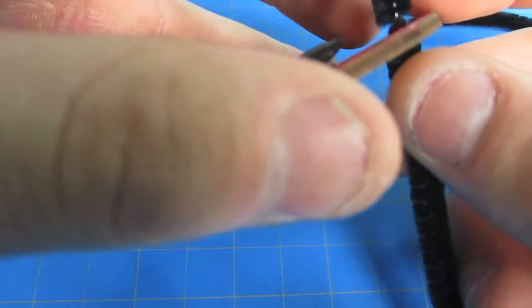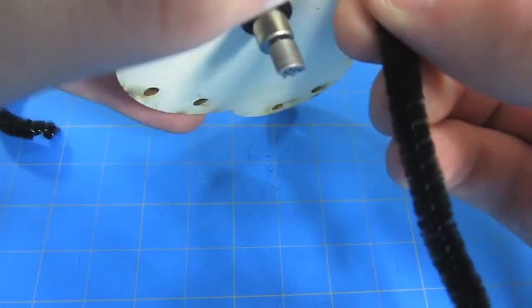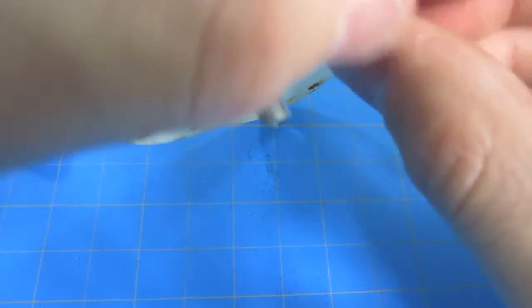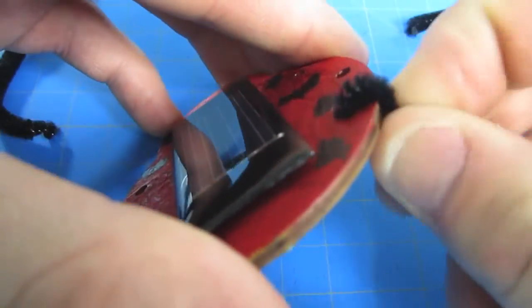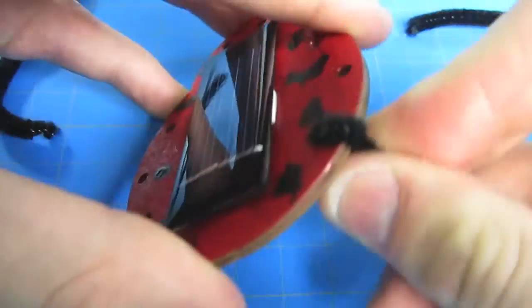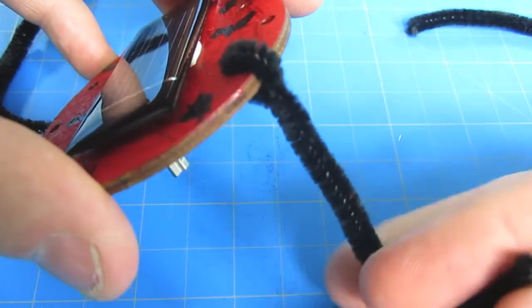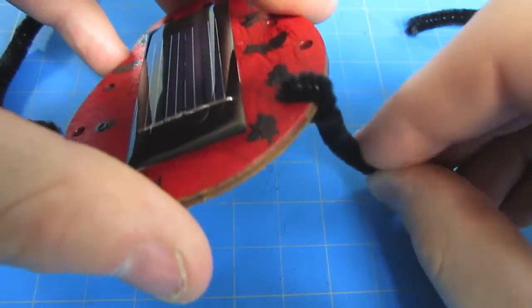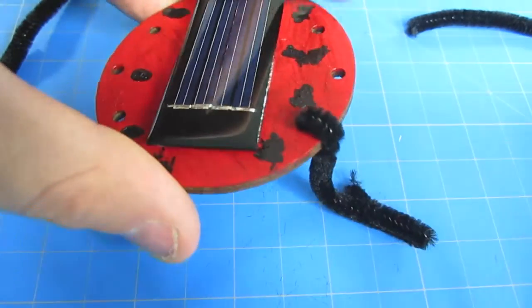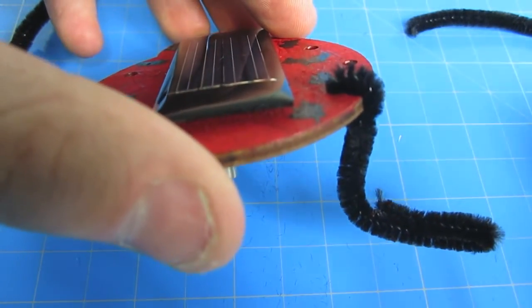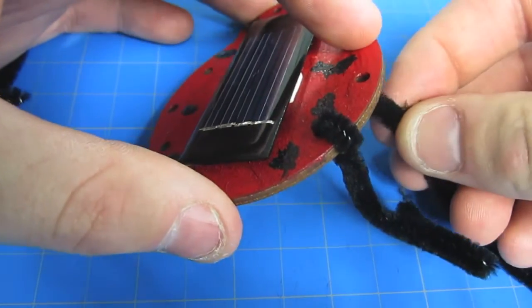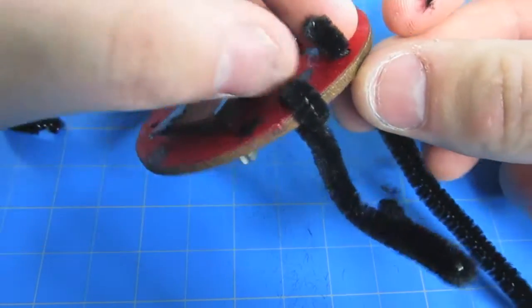Thread one of the cut pipe cleaners through the holes. Make sure it goes through far enough that it can twist around and back onto itself. Twist firmly into place. The more firm it's twisted into place, the better it will work. Do this with the remaining legs on your bug.